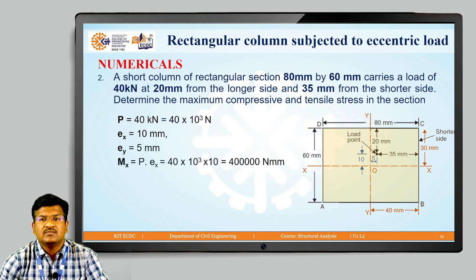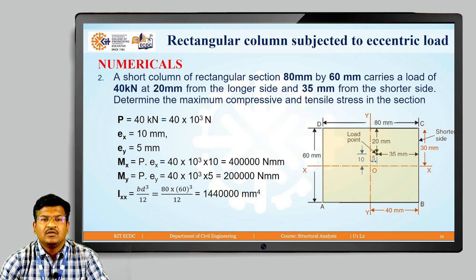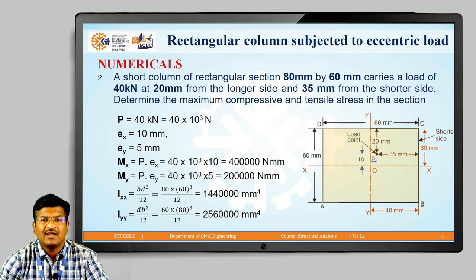Moment due to eccentricity E_x: M_x equals P times E_x equals 40 × 10³ times 10 equals 400 × 10³ N·mm. Moment due to eccentricity E_y: M_y equals P times E_y equals 40 × 10³ times 5 equals 200 × 10³ N·mm. Moment of inertia about X-X: I_xx equals B D³ / 12; after substituting B and D values, I_xx is calculated. Similarly, I_yy equals D B³ / 12; after substituting all values, I_yy is obtained for this rectangular column.